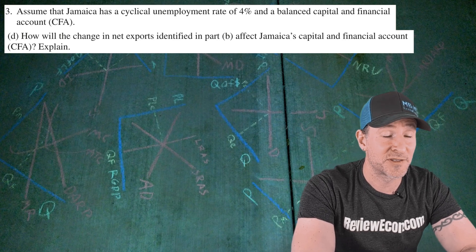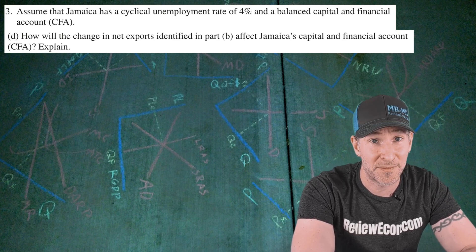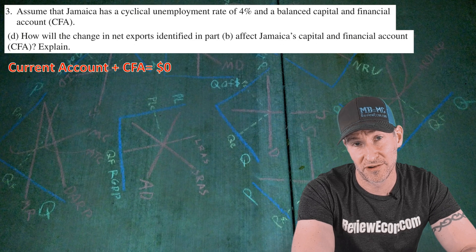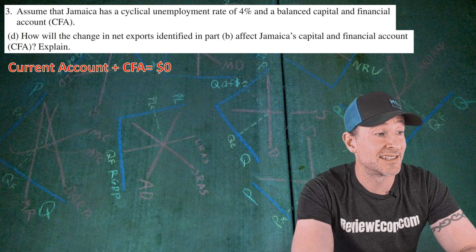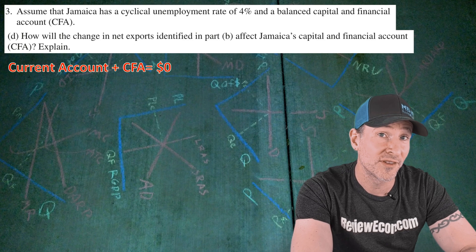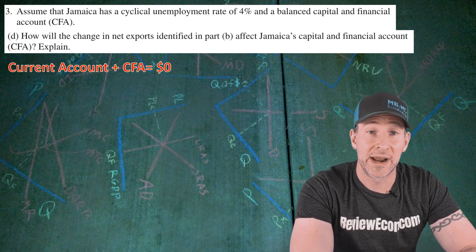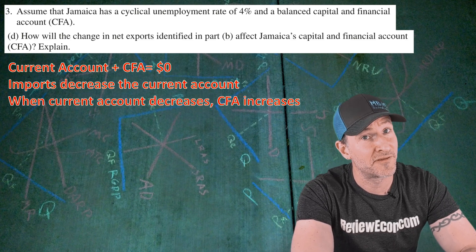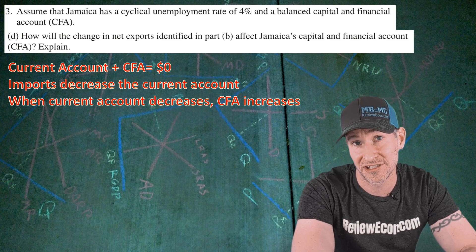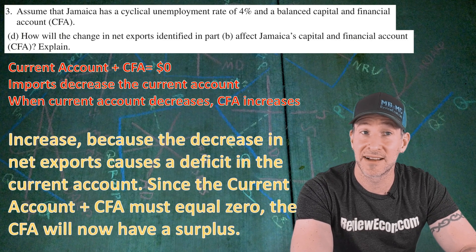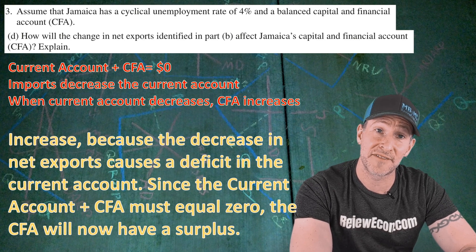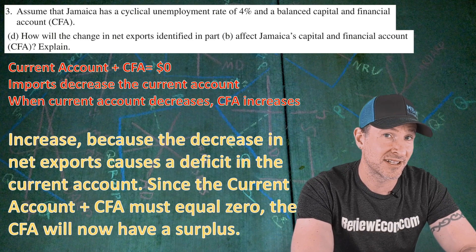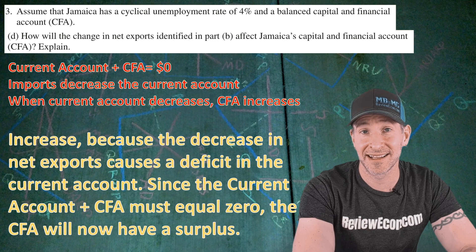For part D, we are asked how the change in net exports will impact the capital and financial account. Remember, the current account plus the capital and financial account must equal zero. At the beginning of this question, the capital and financial account is balanced — meaning both accounts have a zero balance. When a country imports more, that decreases the current account. And when the current account decreases, the capital and financial account must increase, since they always add together to equal zero. So the answer is increase: the decrease in net exports causes a deficit in the current account, and since the current account plus the capital and financial account must equal zero, the capital and financial account will now have a surplus.